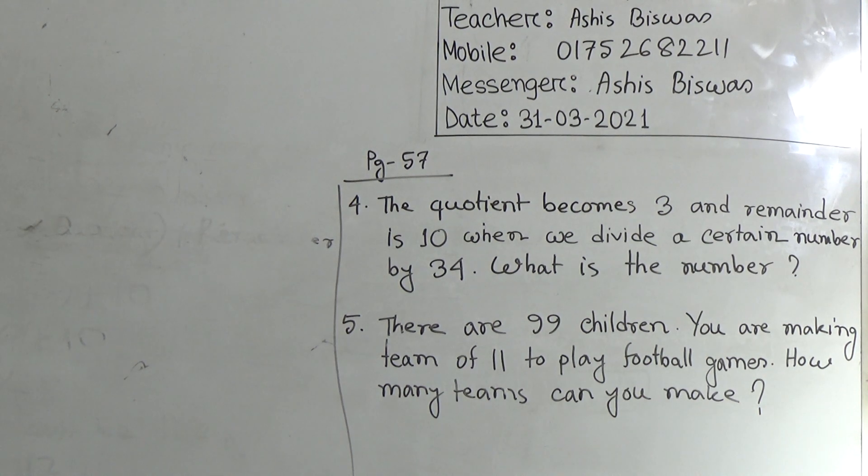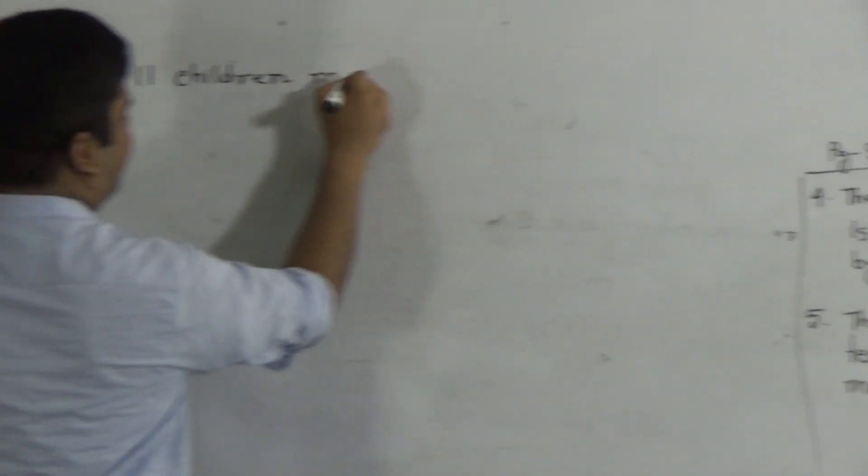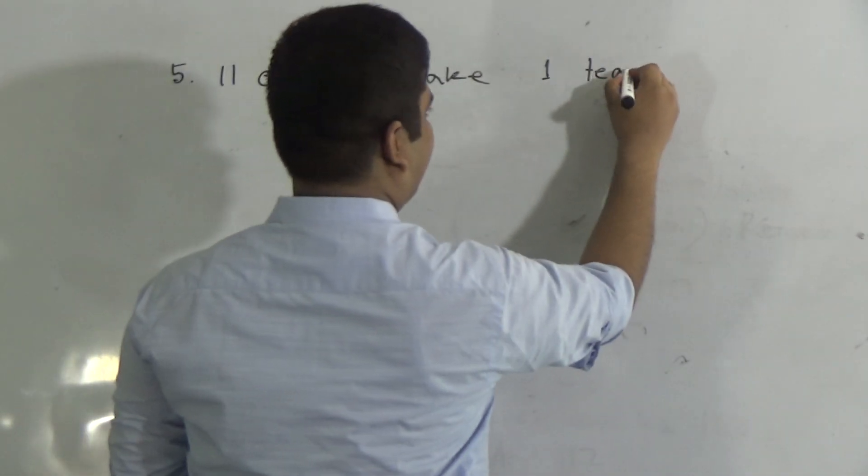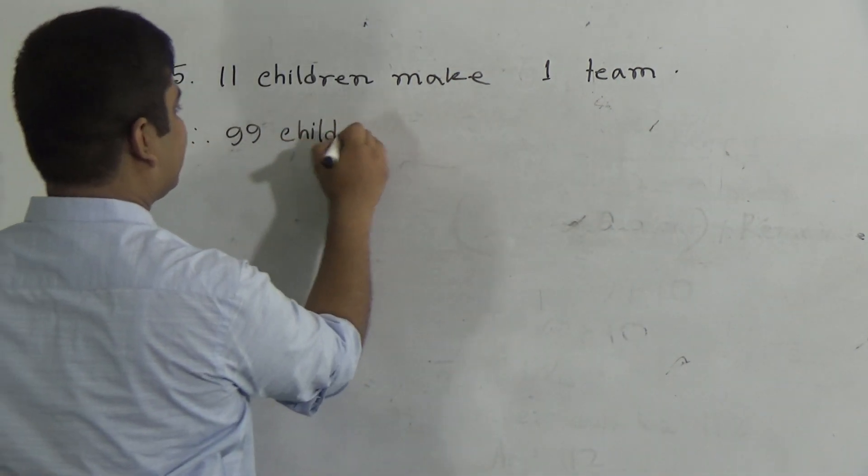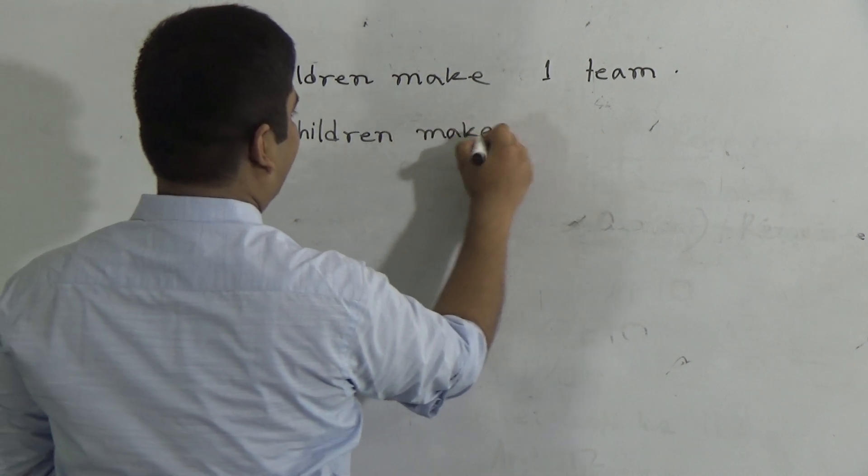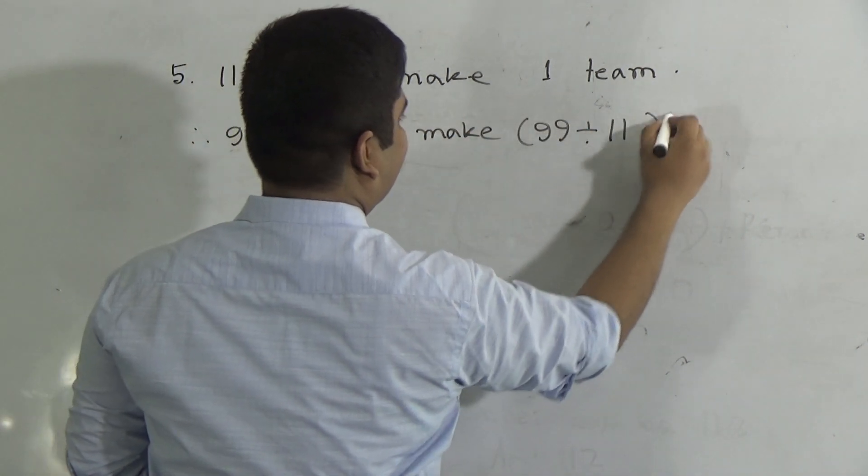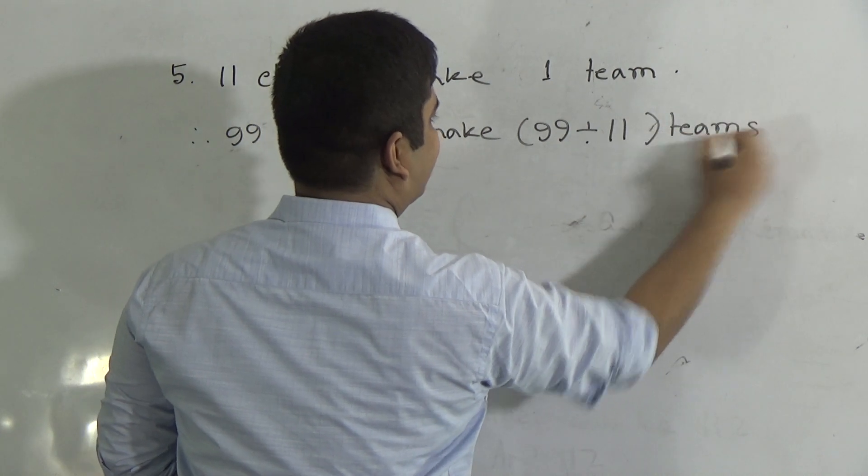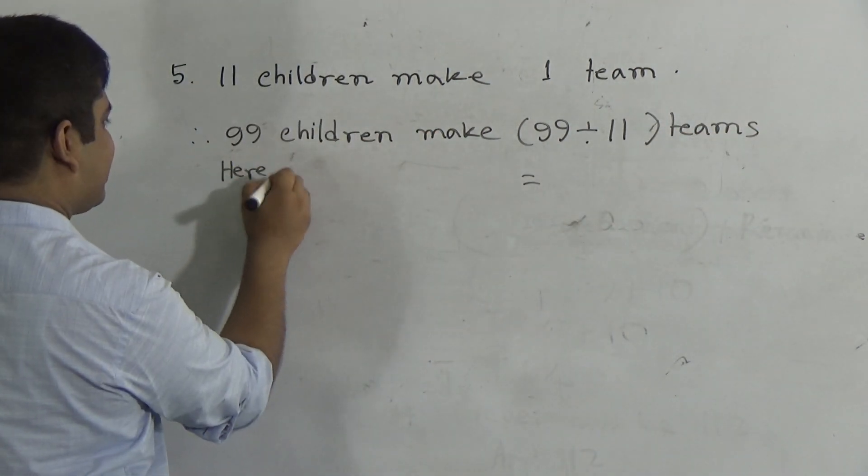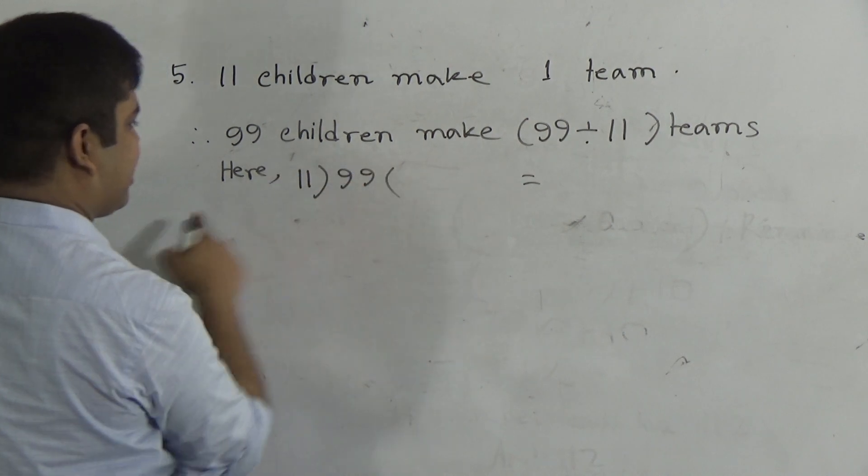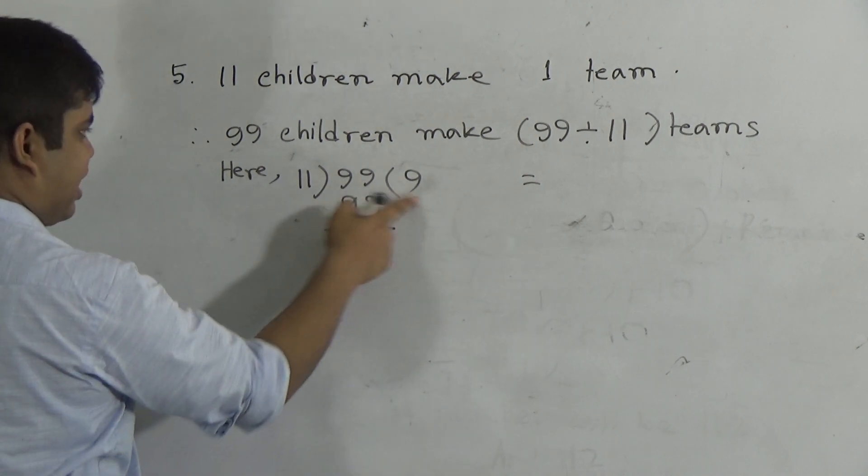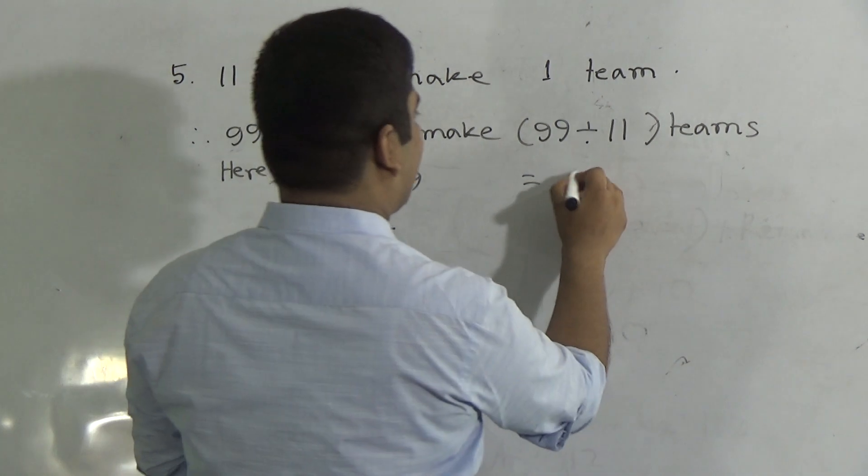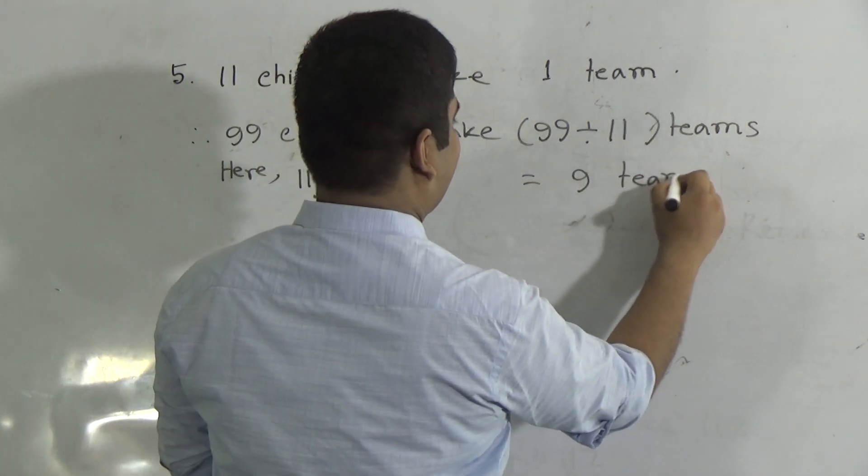Here we show the division procedure. 11 divided by 99. In 99, 11 goes in 9 times. 9 elevens are 99. Now, 9 teams, and this is the answer. As our solution is done, we must write answer. And it is so easy math, right? I hope you have understood.